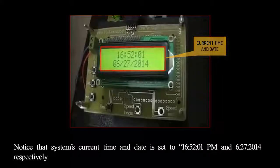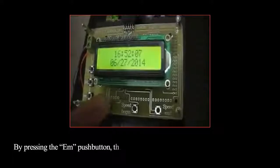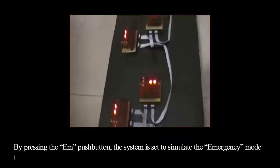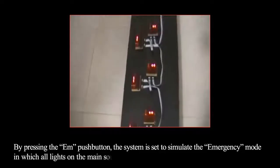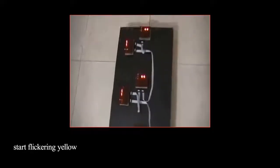By pressing the EM push button, the system is set to simulate the emergency mode, in which all lights on the main south-north road and the east-west roads start flickering yellow and red respectively.